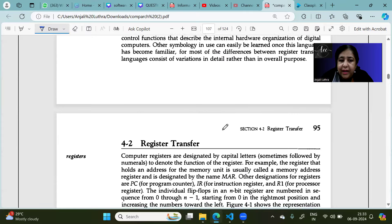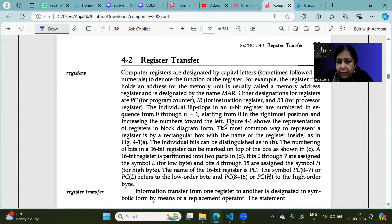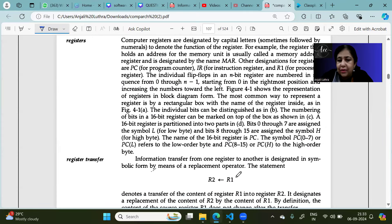For example, if you have to show that a register is transferred to another register, then you can write it like this. What I have written here? R1, this arrow, is R2. What does this mean? That R1 is copied to R2. So whatever data is in R1, the same data is in R2. So this is as simple as that.